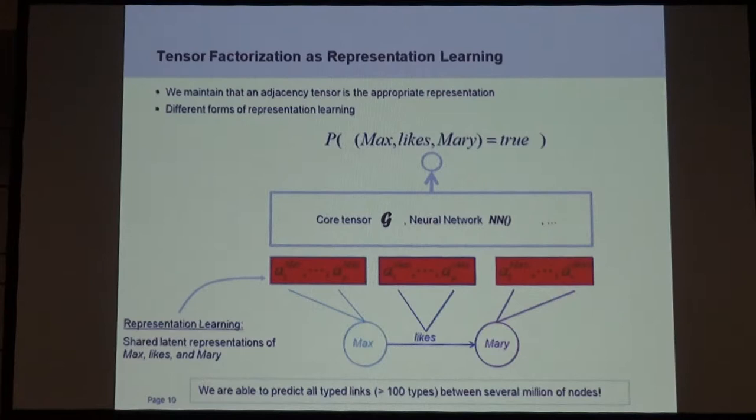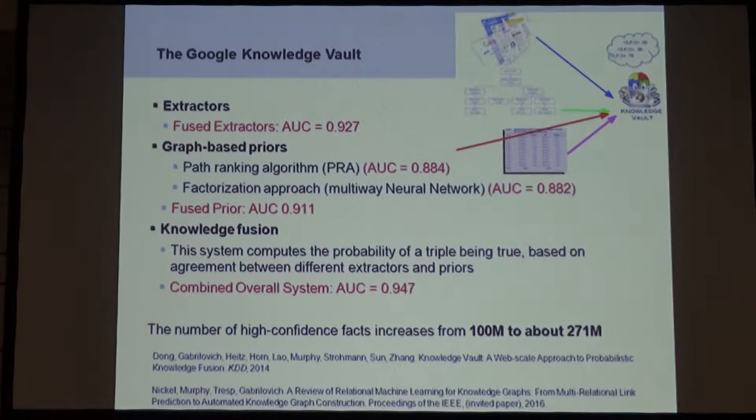Importantly, every entity has only one latent representation, independent of whether it's a subject or an object in the relation. By doing this, we get propagation of information through the graph. It's not just a local operation — it incorporates information which might be several steps away in the graph. And it scales quite nicely.